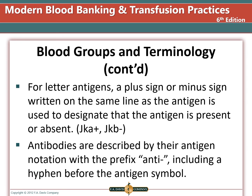How the phenotype is written depends on the antigen nomenclature and whether letters or numbers are used. For letter antigens, a plus sign or minus sign written on the same line as the antigen is used to designate that the antigen is present or absent. Antibodies are described by their antigen notation with the prefix anti-, including a hyphen before the antigen symbol.